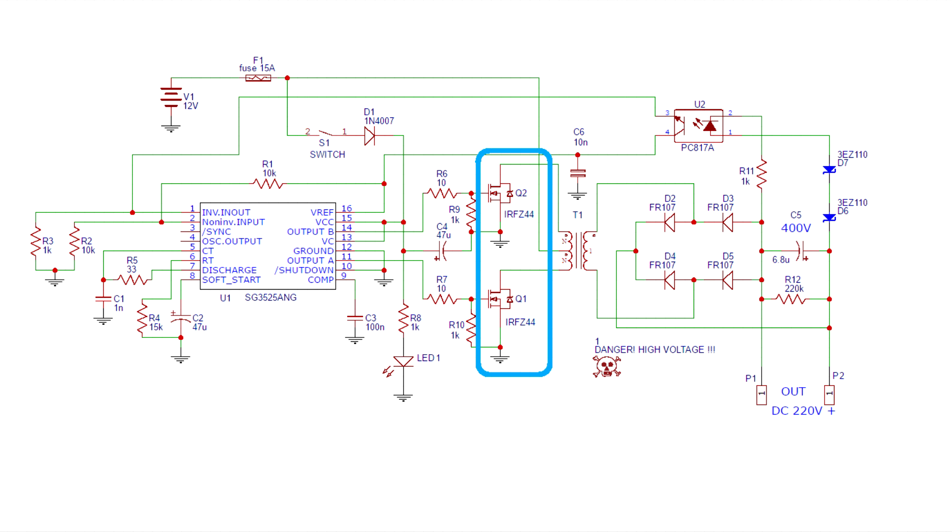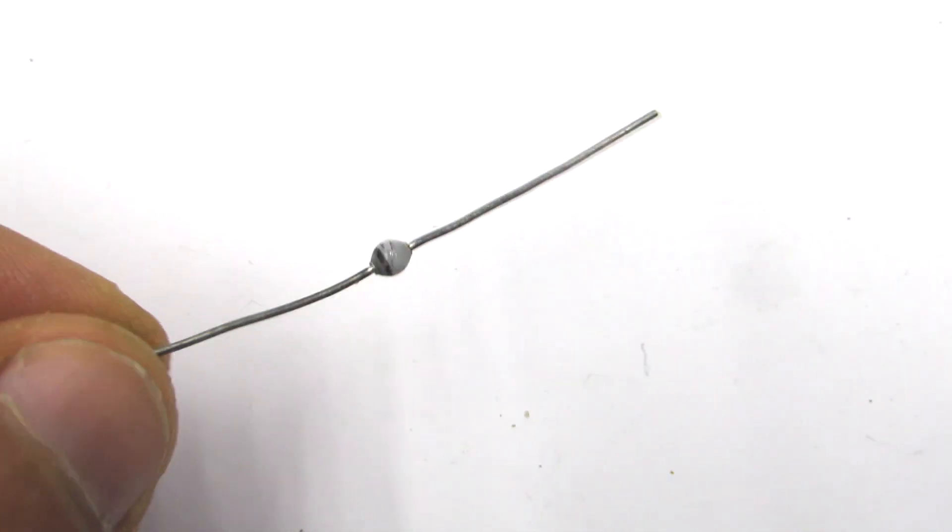Gates of FETs are the loads of the chip outputs and FETs control the pulse transformer. Voltage feedback is organized with a pair of zener diodes and an optocoupler.